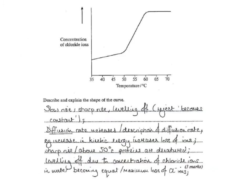This is a slightly different situation where you're increasing the temperature and looking at the permeability of a cell surface membrane, measured by the concentration of chloride ions found outside a cell. As more chloride ions are lost through the cell surface membrane, the concentration outside increases. This question asks us to describe and explain. The describe part is: there's a slow rise, then a sharp rise, and then it levels off. The explanation for the slow rise at the beginning is simply that the diffusion rate increases because of an increase in kinetic energy.